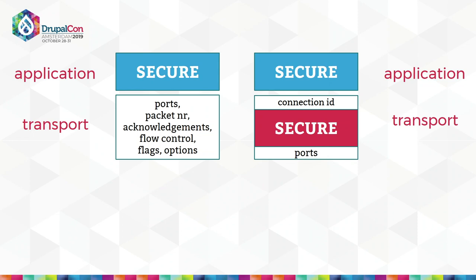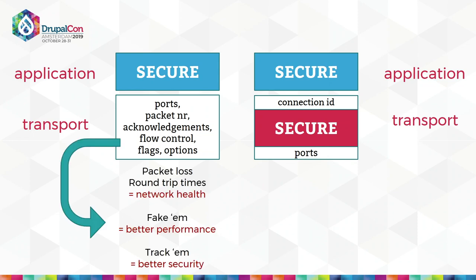In TCP, those fields are being used by a lot of devices on the internet for interesting features. For example, network operators use this to estimate how healthy their network is. Satellite internet providers can fake these fields to improve their performance. And firewalls use TCP header fields for security features. With QUIC, these are all encrypted — you can no longer see them. The main reason for this is that QUIC wants to stay flexible and evolve in the future. The real reason we can't evolve TCP anymore is exactly because middleboxes are using these fields. With QUIC, if it's encrypted, no one can read it or use it, so we can easily change it later without breaking anything.